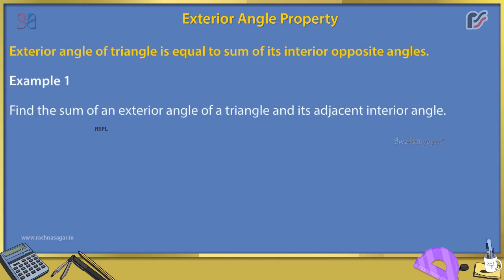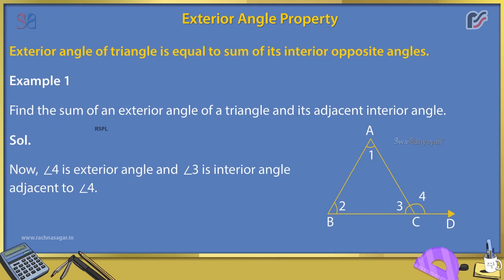Example 1: Find the sum of an exterior angle of a triangle and its adjacent interior angle. Solution: angle 4 is the exterior angle and angle 3 is the interior angle adjacent to angle 4. Now, angle 3 plus angle 4 is equal to 180 degrees. Linear pairs.